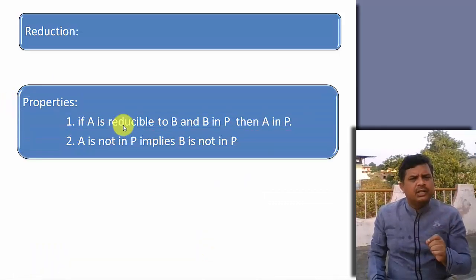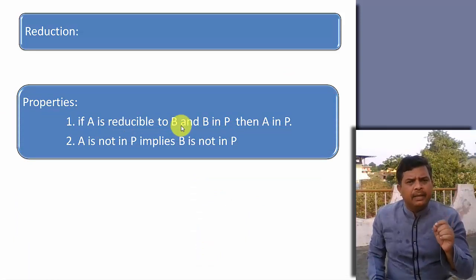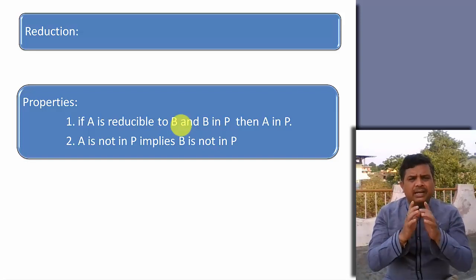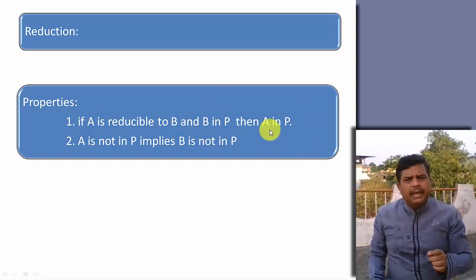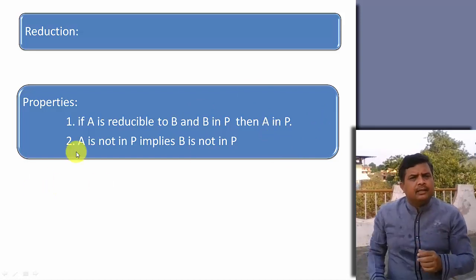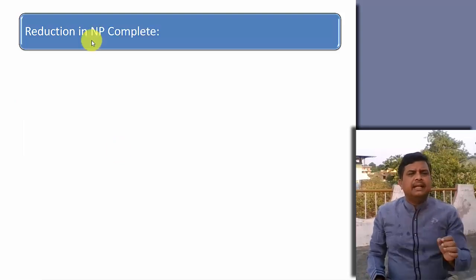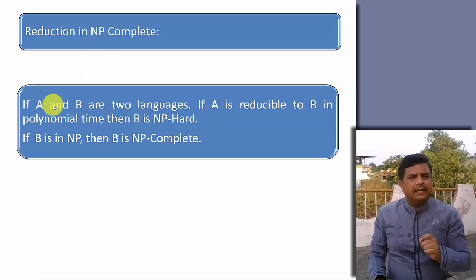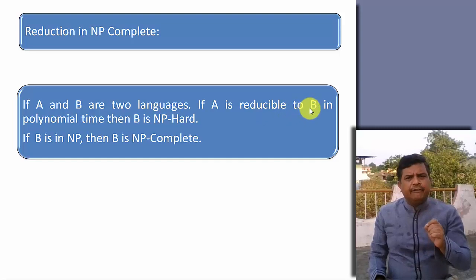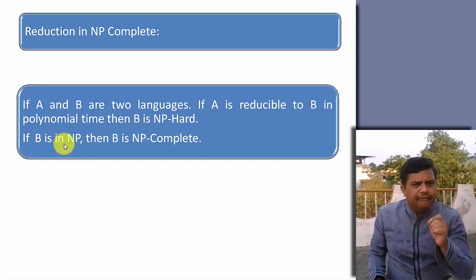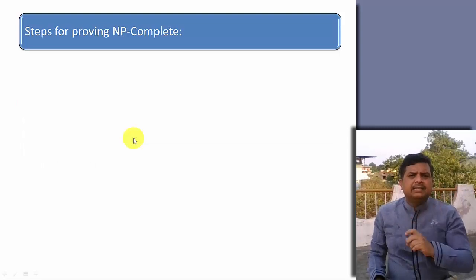There are a few properties for reduction. If problem A is reducible to problem B and problem B is a polynomially solvable problem or a P problem, then problem A is also in P. The second property is: if A is not in P, it implies B is not in P. Now, let us understand reduction in NP complete. If A and B are two problems and A is reducible to B in polynomial time, then B is in NP hard. And if B is in NP, then B is NP complete.